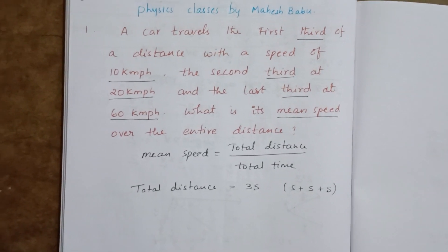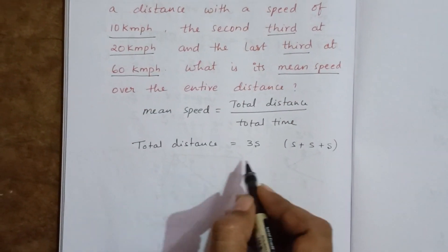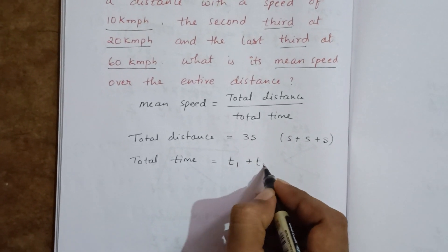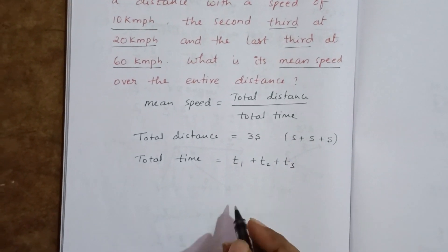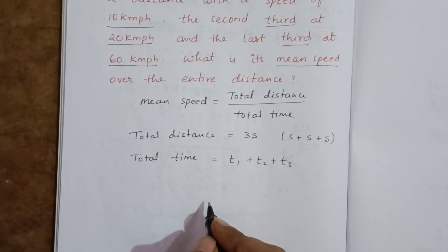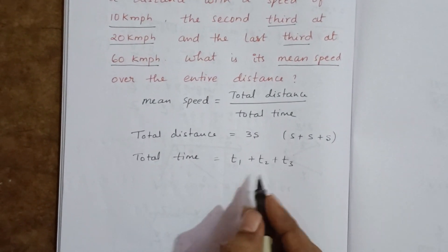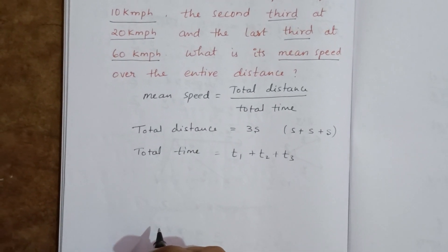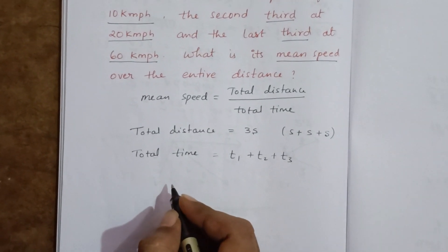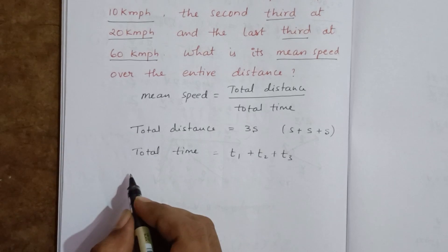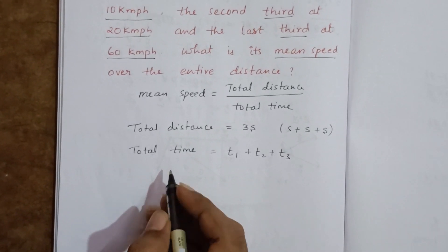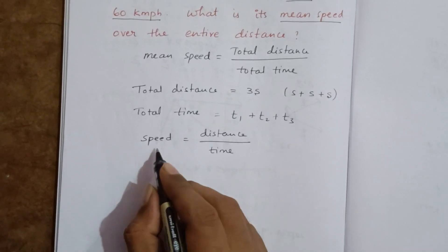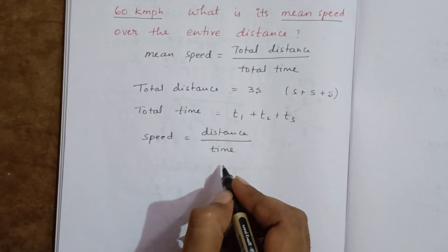What is the total time? Total time is t1 plus t2 plus t3. They didn't give time in the question, so we should find it. Speed equals distance by time, so time equals distance by speed.